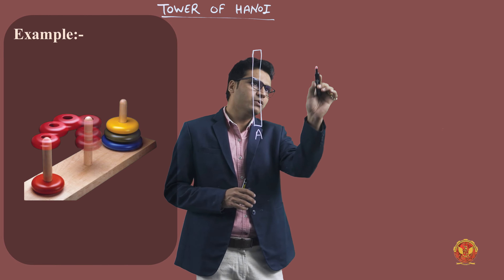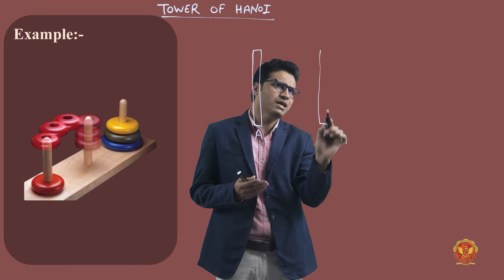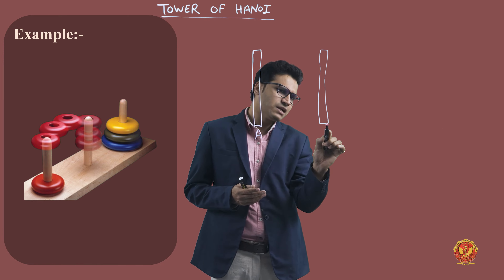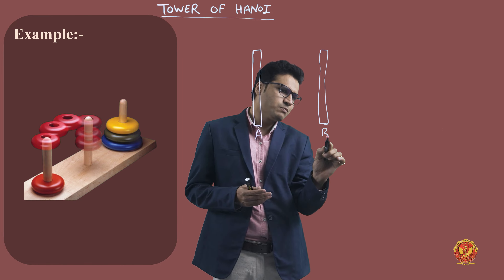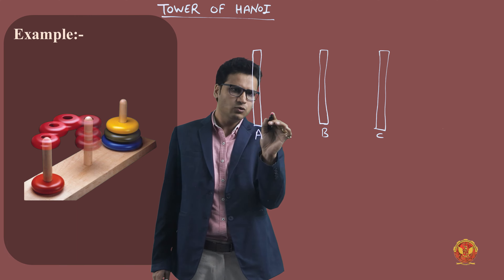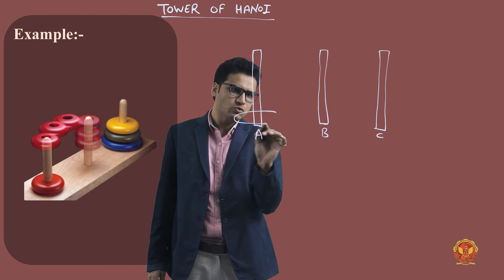Here suppose we have three towers — tower A, tower B, and tower C. We have n equal to 3. In these three towers there are rods, and on these rods there are some plates stored.